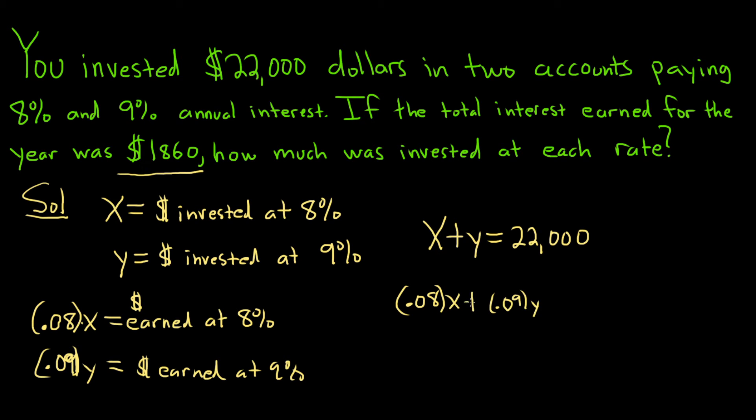If we add these up, the money earned at 8% plus the money earned at 9% equals the total money earned, so 1860. This first equation tells us how much we invested. The second equation tells us how much we earned. So the money earned from the first account plus the money earned from the second account equals the total money earned.